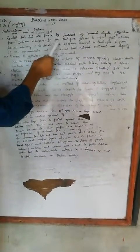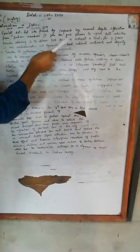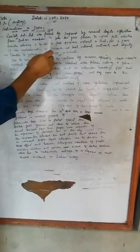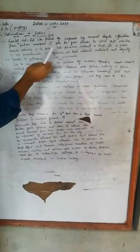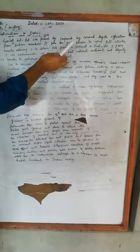The Rowlatt Act gave the government powers to repress political activities, besides allowing it to detain political prisoners without a trial for 2 years. This was considered deeply undemocratic.